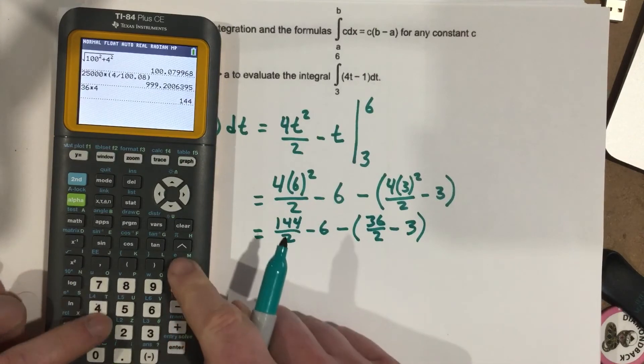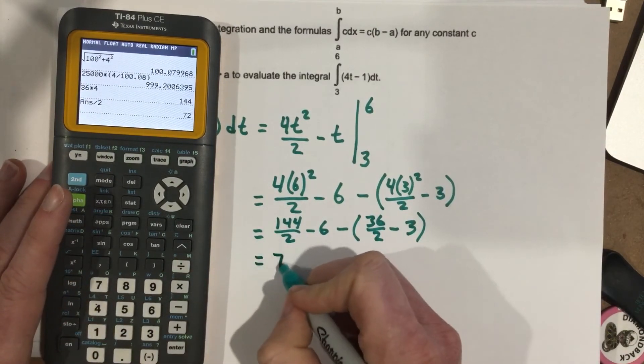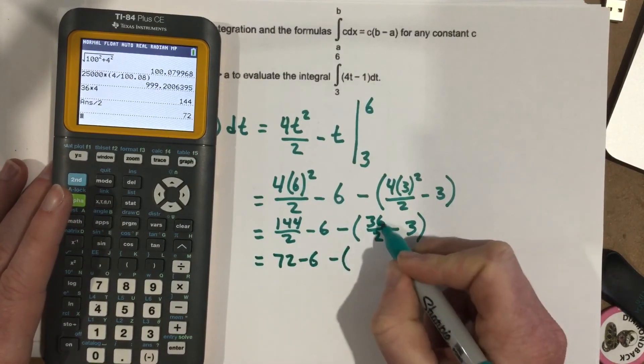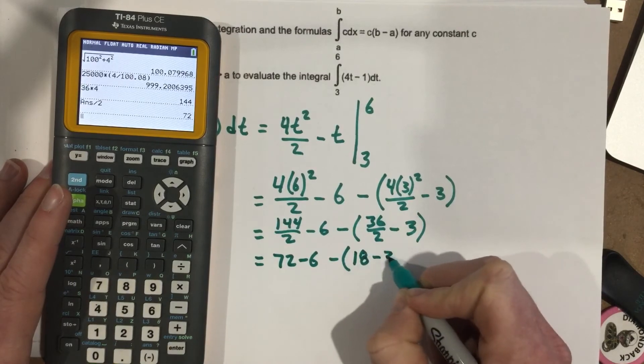144 divided by 2, so I end up with 72 minus 6 minus, 36 divided by 2 is 18, 18 minus 3.